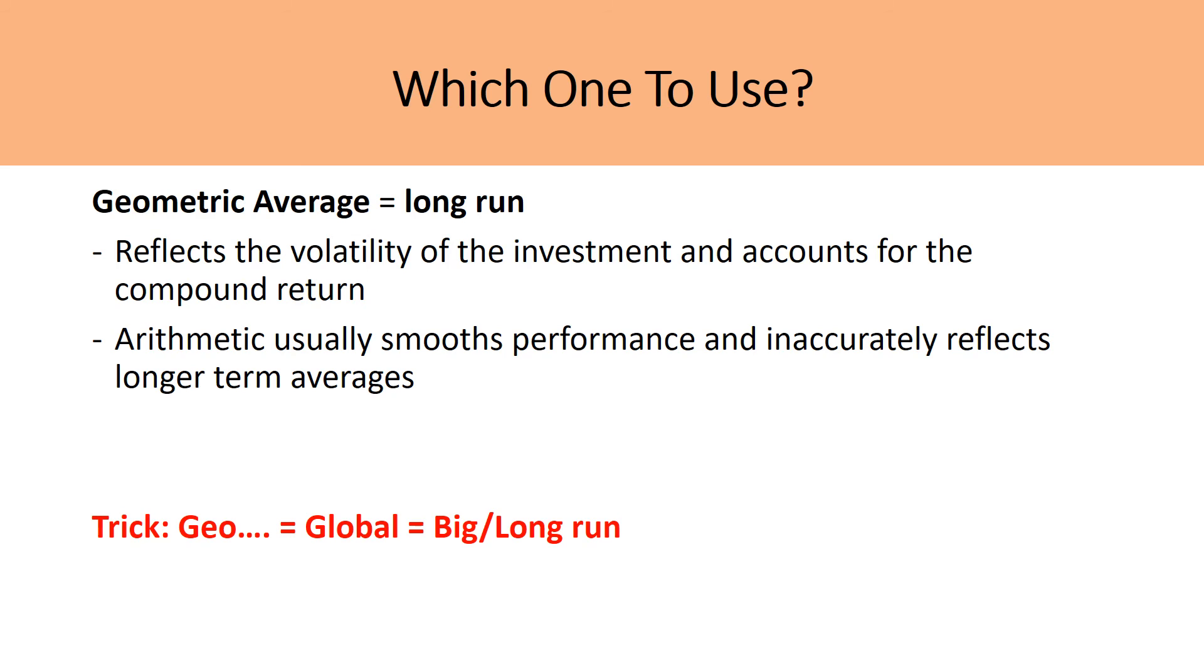So which one do we use? Well, the geometric average is better used in the long run because it reflects the volatility of the investment and accounts for the compound return. The arithmetic average usually smooths that performance and inaccurately measures the longer term averages. And so quick trick to kind of remember which one's which: geometric, I think of geo as global, something big, long, and I think long run. So geometric average is better in the long run. And so then we can conclude that in the short run, the arithmetic average is better.